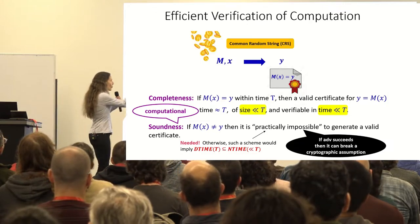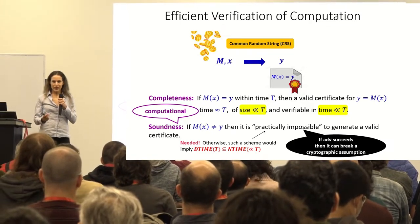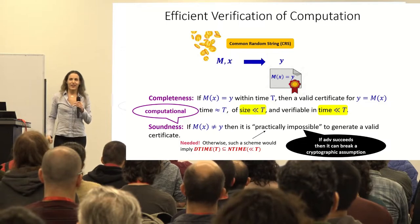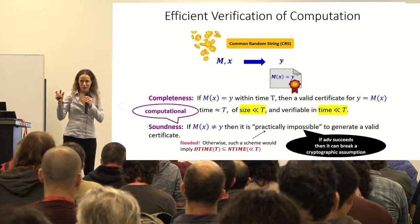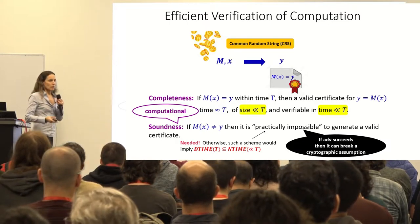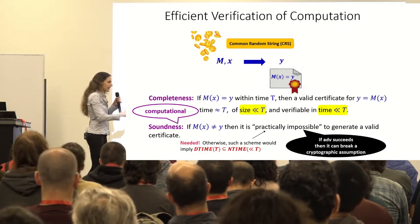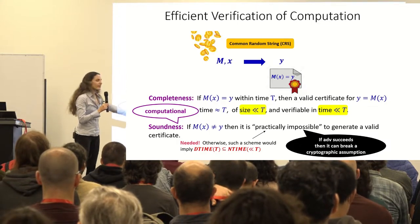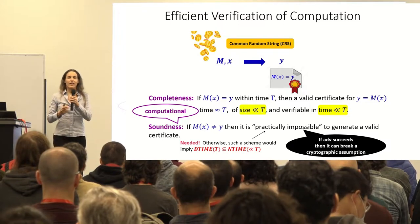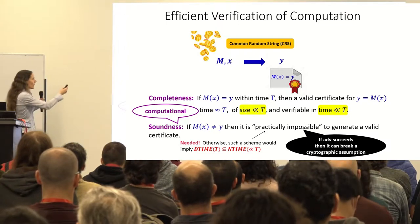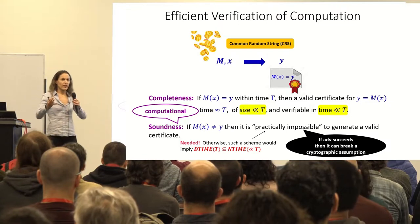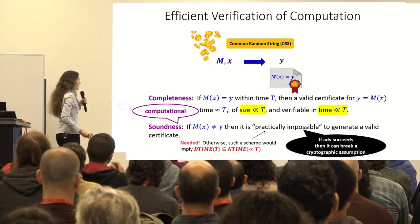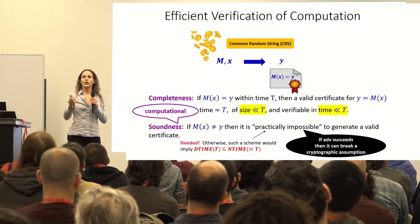To construct these certificates, we also need the prover and verifier to share a common random string. This common random string is often like a description of a hash function — think SHA-256 or similar. The reason we need it is that without it you get the same negative result; it's in this common random string that we embed our cryptographic assumption. Given this CRS, I can generate a certificate and you can verify it.